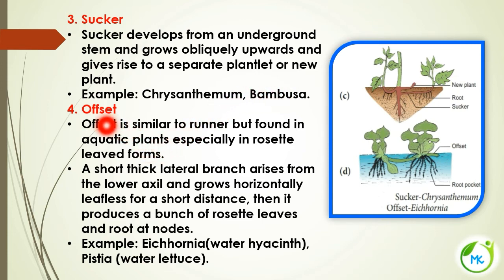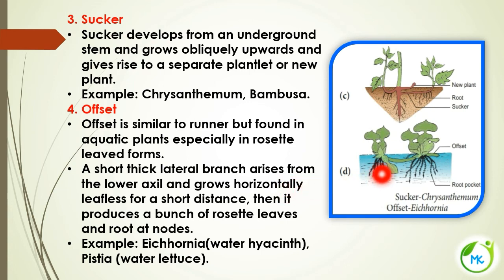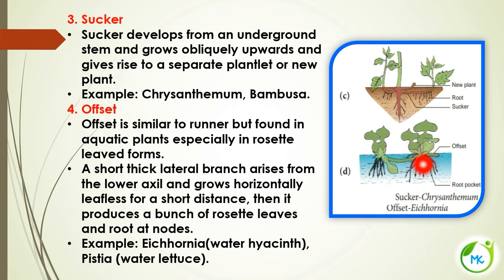The next kind is offset. Offset is similar to runner but is found in aquatic plants, especially in rosette-leaved forms. A short, thick lateral branch arises from the lower axil and grows horizontally without leaves for a short distance, then produces a bunch of rosette leaves and roots at the node. Examples are Eichhornia (water hyacinth) and Pistia (water lettuce).